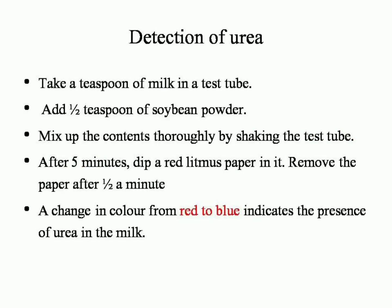Detection of urea in milk: take a teaspoon of milk in a test tube, add half a teaspoon of soybean powder, and mix thoroughly by shaking. After 5 minutes, dip a red litmus paper in it and remove after half a minute. A change in color from red to blue indicates the presence of urea in the milk.